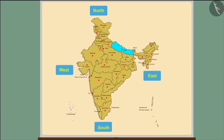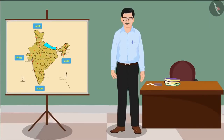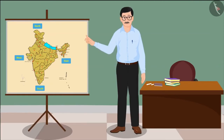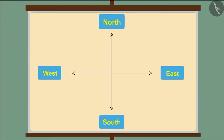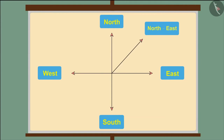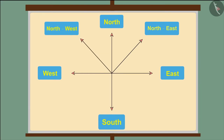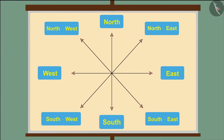Children, you just learned which states lie in the four directions of India. But do you know that there are four additional directions besides these? There is one more direction in the middle of north and east — it is called north-east. Similarly, the direction in the middle of north and west is called north-west. The direction between south and east is called south-east, and the direction between south and west is called south-west.